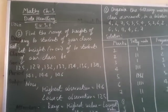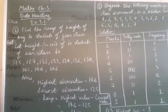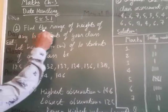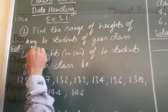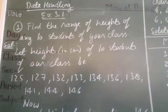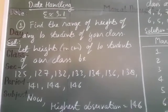When you do Chapter 3, Data Handling, Exercise 3.1, first question, you have to find the range of heights of any 10 students of your class. The data is not given — you have to take the heights yourself.